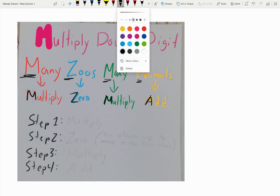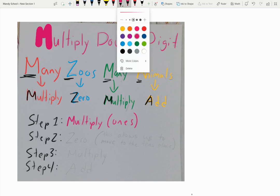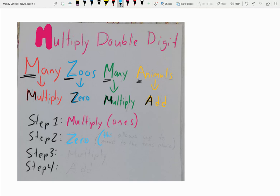The first step you're going to be taking will be your multiply. So that just means you're looking at the ones place, you'll be looking at your ones place and multiplying those. And then the next step that you'll be doing is you're adding the zero right below it in the ones place. So this allows, when you add the zero, this allows us to move to the tens place.